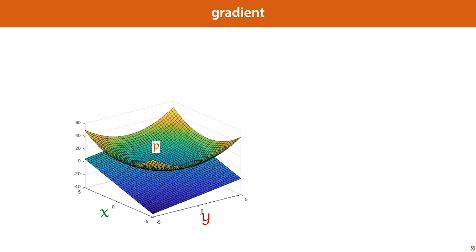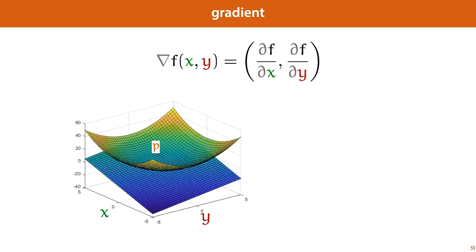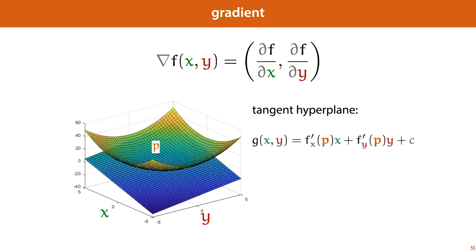So this gradient — written as an upside-down triangle — is basically a vector of these two derivatives: the derivative of f with respect to x, and the derivative of f with respect to y. These are called partial derivatives, because we're taking the derivative with respect to only one argument of the function. And if we take these two derivatives, we get the slopes of the tangent hyperplane of the function f at point p. Or written as a dot product, the tangent hyperplane at point p is a function g of x expressed by the dot product of x with the gradient of f at p, plus some bias term c which we're not usually interested in.